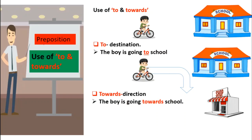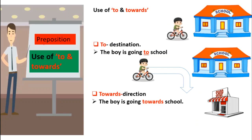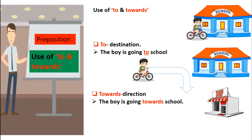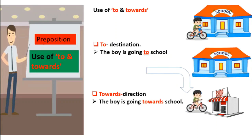Now the use of 'to' and 'towards'. 'To' is used to mean the destination of someone. Like, the boy is going to school — the destination of this boy is the school. 'Towards' is used to mean direction. Like, the boy is going towards the school, but here the direction of the boy was the school while his destination was the shop.